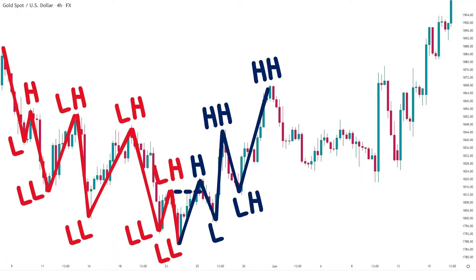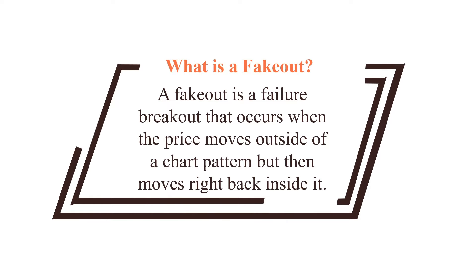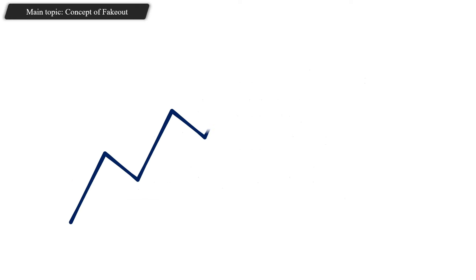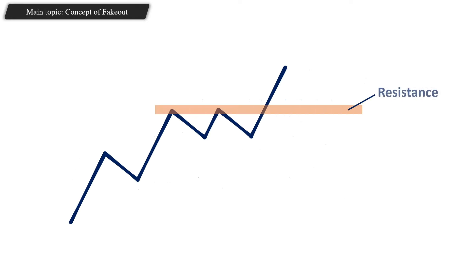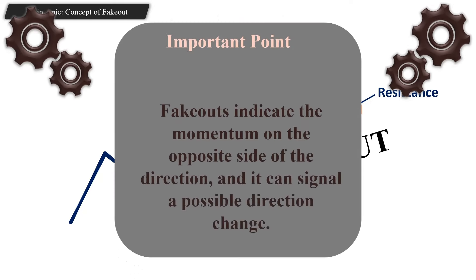Now let's talk about fake outs. A fake out is a failed breakout that occurs when the price breaks outside of a chart pattern but then moves right back inside it. Imagine we are in an uptrend and the market breaks resistance to the upside. When the market pulls back to that zone we expect it to act as support, but if it breaks right through without hesitation, we call this a fake out.